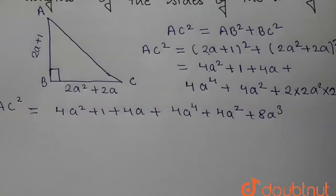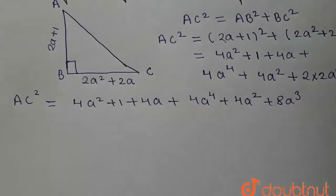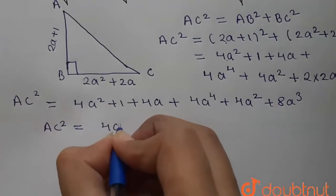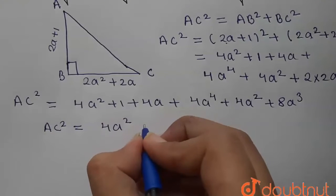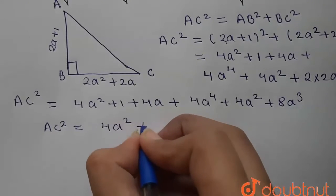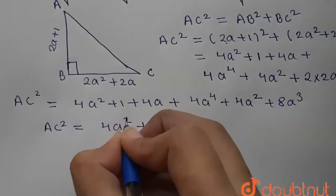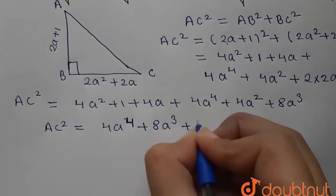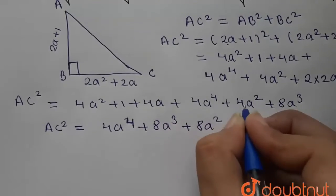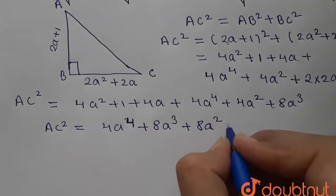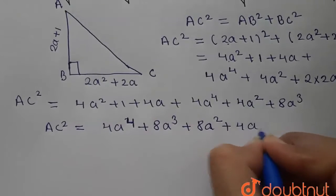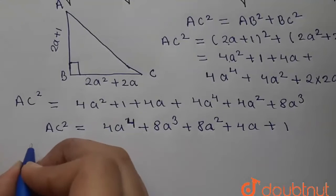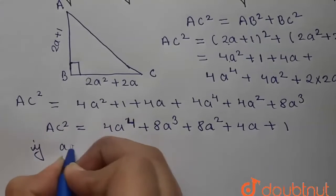Combining all terms, AC squared is equal to 4a to the power 4 plus 8a cubed plus 8a squared plus 4a plus 1.